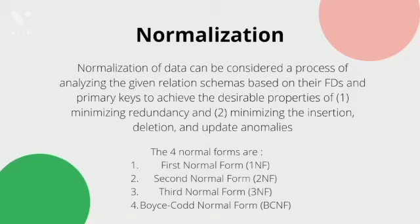Normalization. There are four normal forms: first, second, third, and fourth — that is 1NF, 2NF, 3NF, and BCNF.